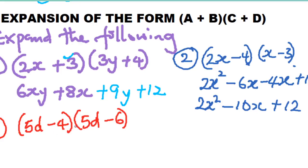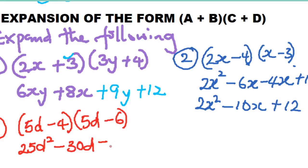5d times 5d: 5 times 5 is 25, d times d is d squared — giving 25d². Then 5d times minus 6: plus times minus gives minus, 5 times 6 is 30, bring down d — minus 30d. Now minus 4 times 5d: minus times plus gives minus, 4 times 5 is 20 — minus 20d. Then minus 4 times minus 6: minus times minus gives plus, 4 times 6 is 24 — plus 24.